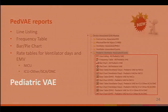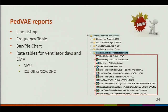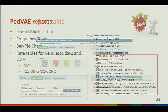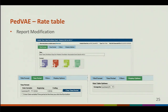Now let's take a look at pediatric VAE, our new module. Pediatric VAE reports include line lists, frequency tables, bar and pie charts. The main analysis tables of pediatric VAE are rate tables — there are rate tables for ventilator days and EMV tables for NICU locations and all other qualifying locations. At this time, there are no SIR tables available for pediatric VAE. The report modification is the same process for other HAI types: title, time period, filters, and display options.